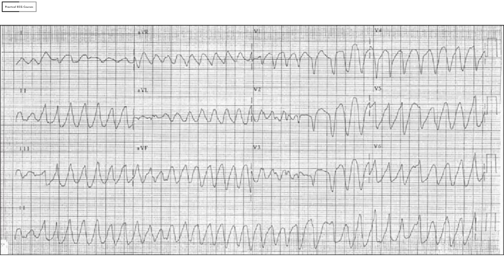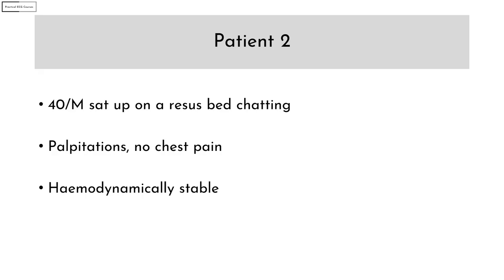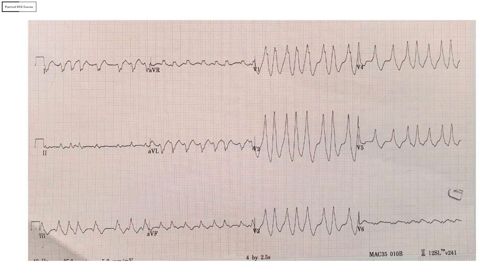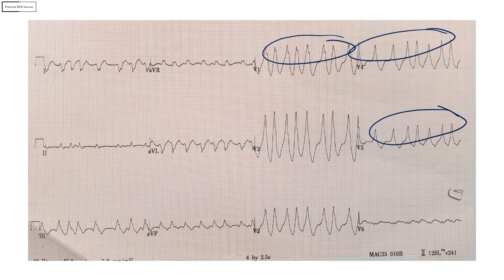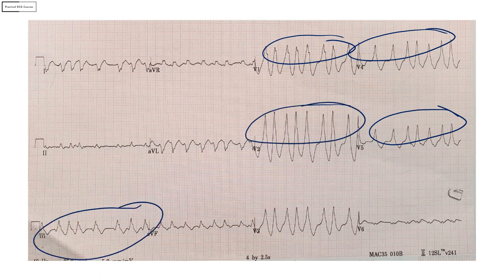An irregularly irregular broad complex tachycardia with QRS of varying morphologies and changing axis in the rhythm strip makes this a polymorphic VT. The next patient is a 40-year-old male sat up on a recess bed chatting. He had come in with complaints of palpitations but no chest pain and was hemodynamically stable. This ECG shows an irregularly irregular broad complex tachyarrhythmia with varying QRS morphologies. There is no rhythm strip but the axis is stable in all 12 leads, making this an AF with WPW.